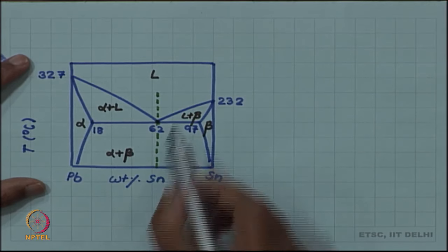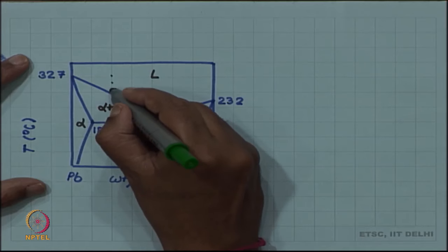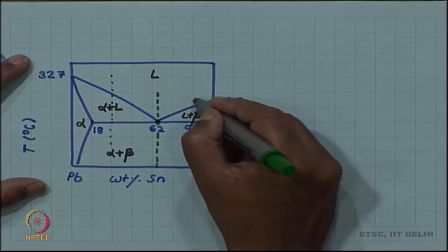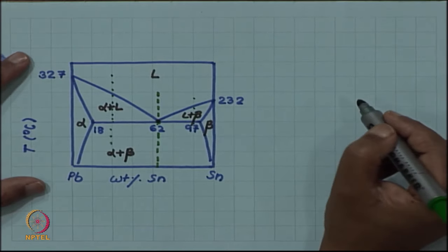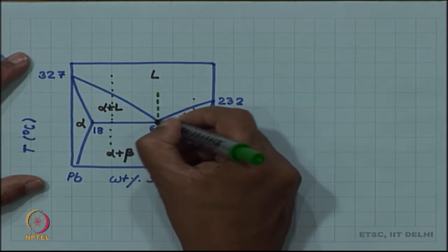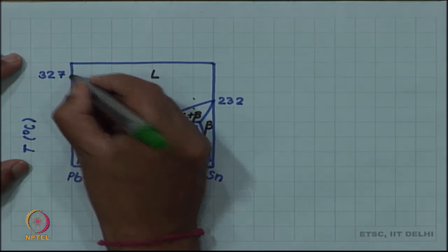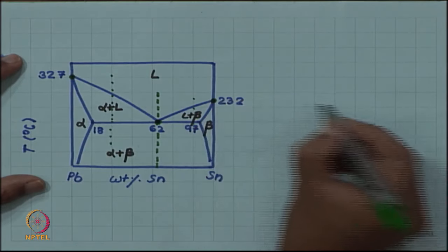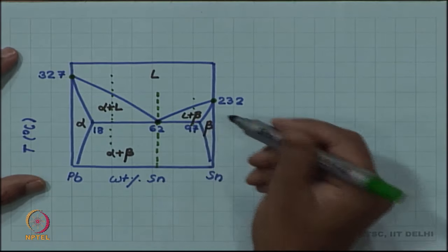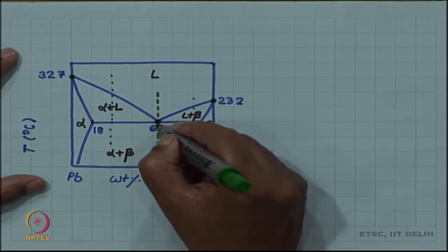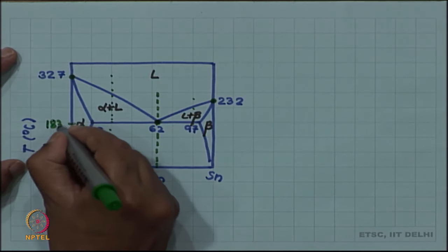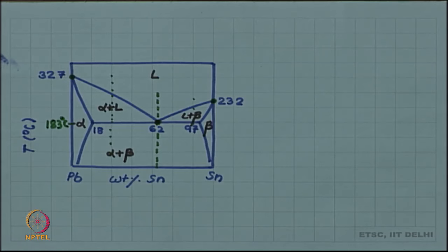Although all other alloys will melt over a range of temperatures, this particular alloy melts at a unique temperature, just like pure elements. Pure lead melts at 327, pure tin melts at 232, and lead with 62 weight percent tin alloy will also melt at a fixed temperature, and that temperature is 183 degree Celsius which we call the eutectic temperature.